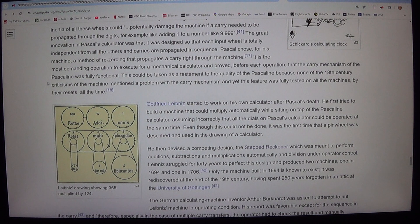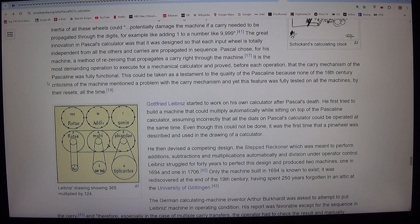Pascal chose, for his machine, a method of re-zeroing that propagates a carry right through the machine. It is the most demanding operation to execute for a mechanical calculator and proved, before each operation, that the carry mechanism of the Pascaline was fully functional. This could be taken as a testament to the quality of the Pascaline because none of the 18th century criticisms of the machine mentioned a problem with the carry mechanism and yet this feature was fully tested on all the machines, by their resets, all the time.